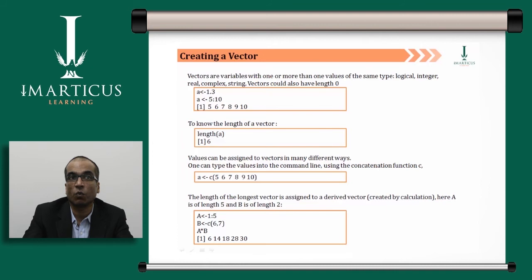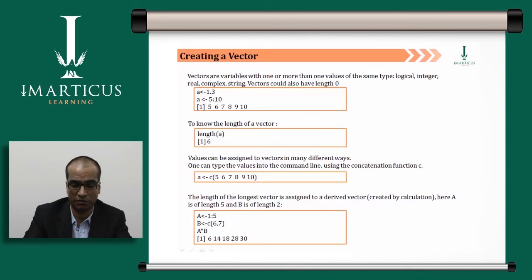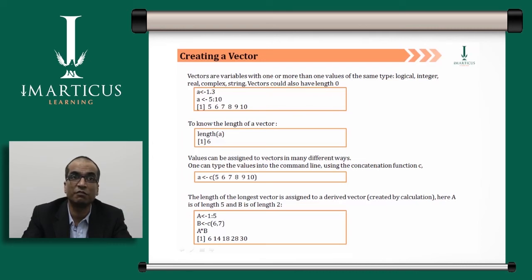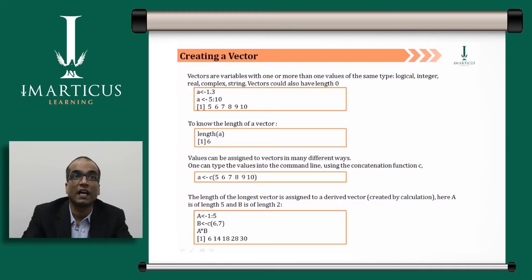For example, a <- 1.3 assigns the value 1.3 to variable 'a'. Using a <- 5:10 creates a sequence from 5 to 10 and assigns it to 'a'. If you type length(a), it returns 6, meaning the vector contains the elements 5, 6, 7, 8, 9, 10. Values can also be assigned using the c() (concatenation/combine) function.